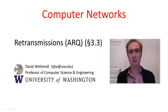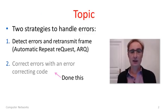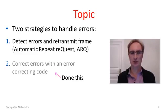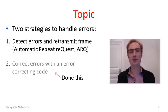G'day viewers. In this segment we'll talk about retransmissions as a strategy for handling errors. We have two general strategies to correct errors in networks. The first strategy is to detect that an error has occurred, say with an error detecting code, and then retransmit the information across the network. We've already seen the error detecting code, so now we're going to focus on the retransmission half of this strategy.